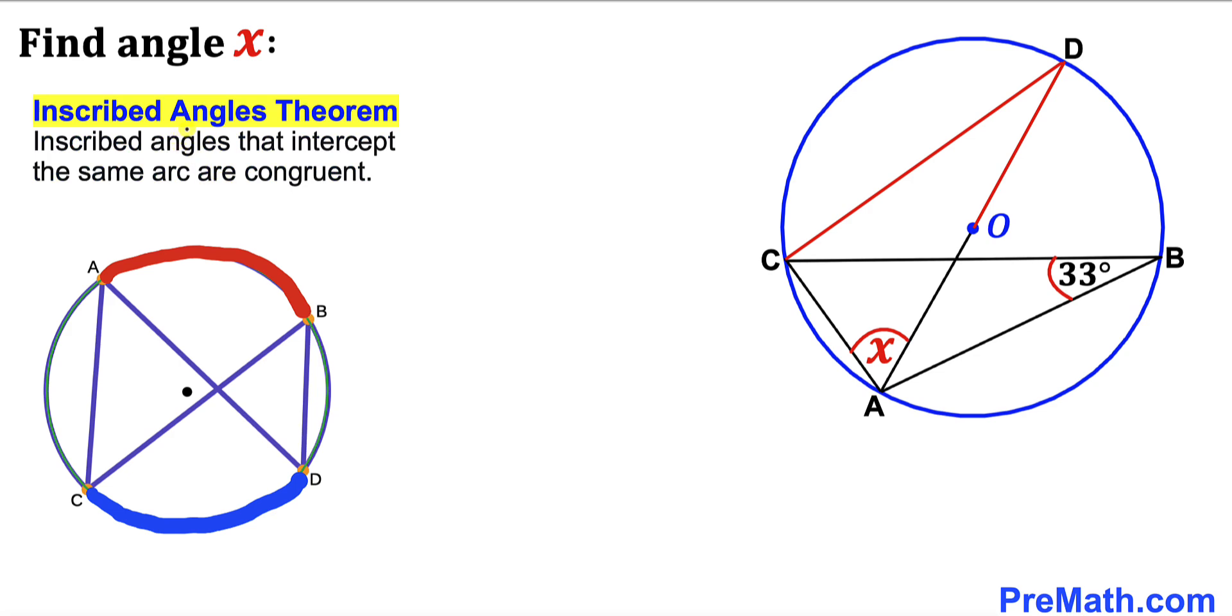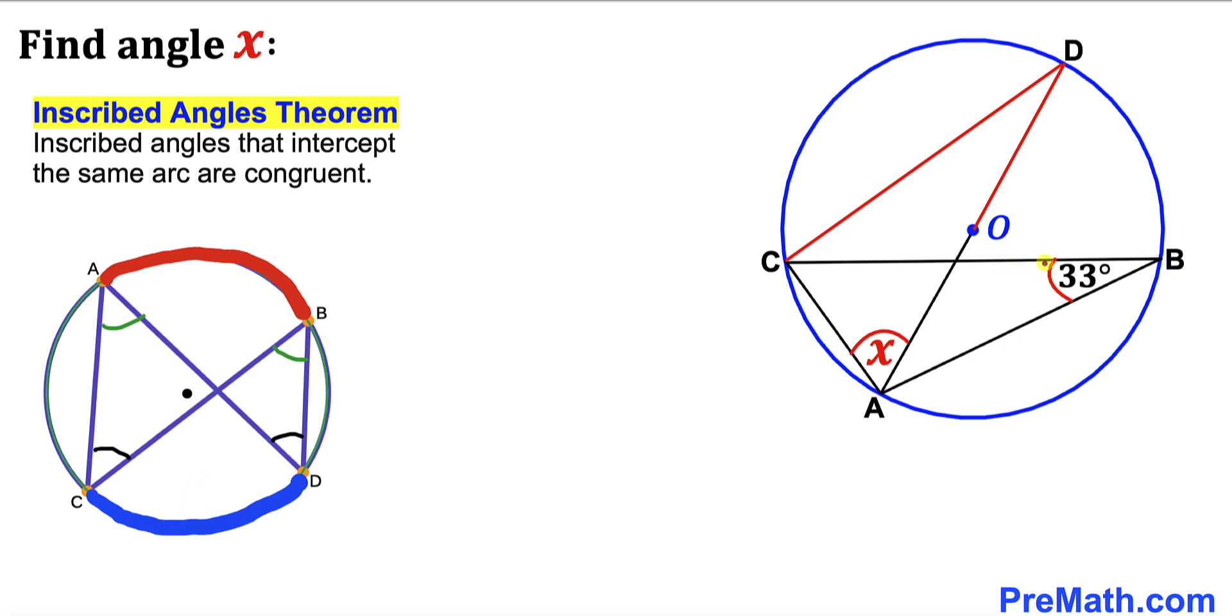Now let's recall the inscribed angles theorem: inscribed angles that intercept the same arc are congruent. Let's focus on these two angles - they are congruent because they intercept this red arc. Likewise, these angles are congruent as well since they intercept this blue arc. Therefore, in our case, this angle and this angle are going to be congruent.